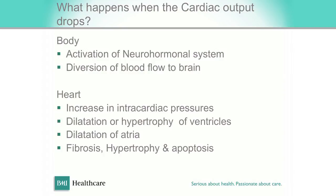So what happens in the body when the heart fails to maintain adequate cardiac output? There is activation of the neurohormonal system with a view to divert blood flow to the brain. In the heart there is high intracardiac pressure, and as a result there is dilatation or hypertrophy of all the chambers, as well as ongoing myocardial fibrosis and programmed cell death. So it is a rapidly progressive disease unless we diagnose early and treat.